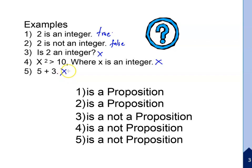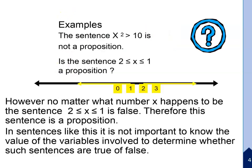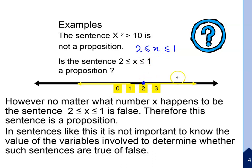This is not a proposition. Let's look at the example: the sentence 'x squared greater than 10' is not a proposition. Now consider: is the sentence '2 less than or equal to x less than or equal to 1' a proposition? We can look at this using a number line.